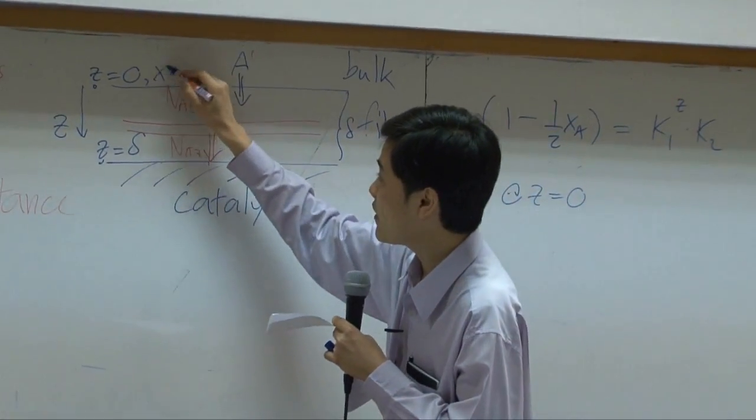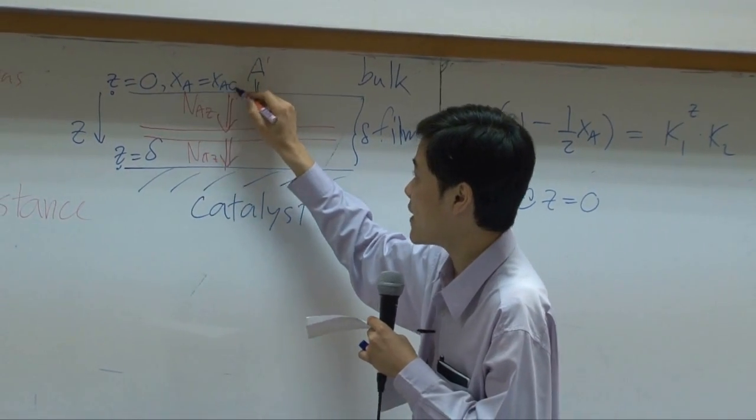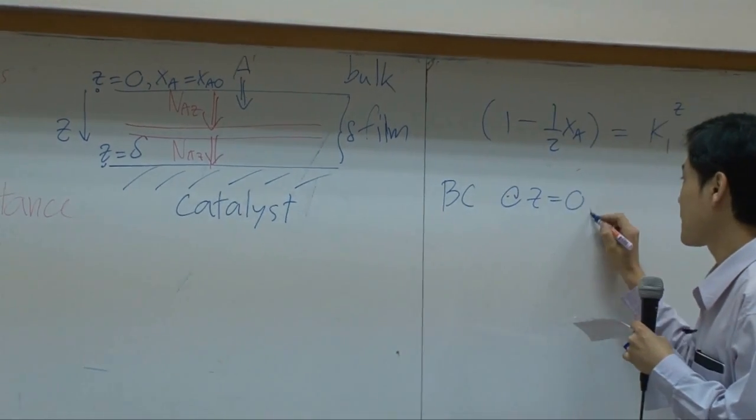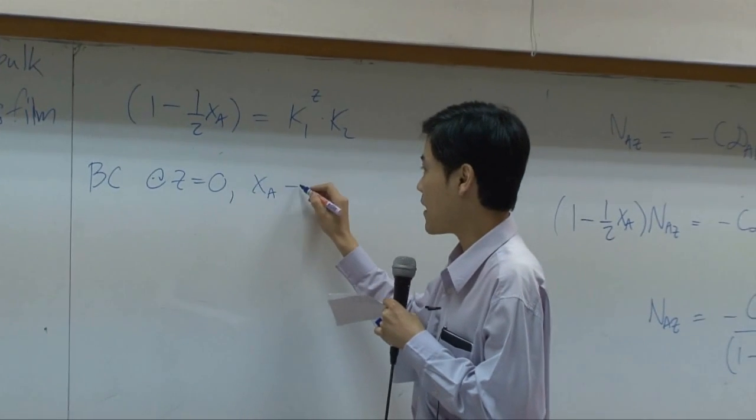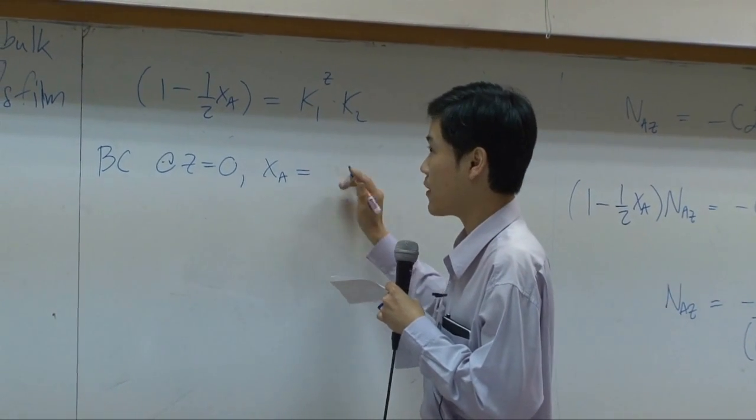So let's say at this point, XA is equal to XA0. This would become our first boundary condition.